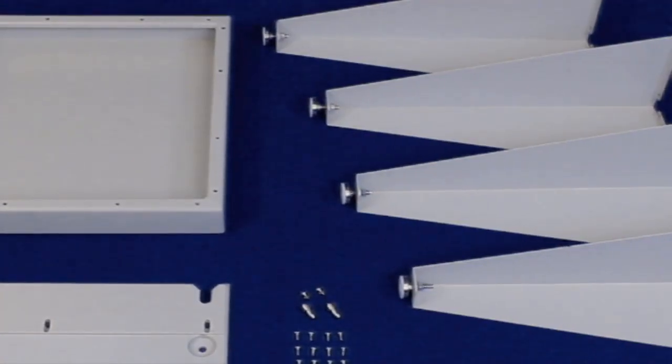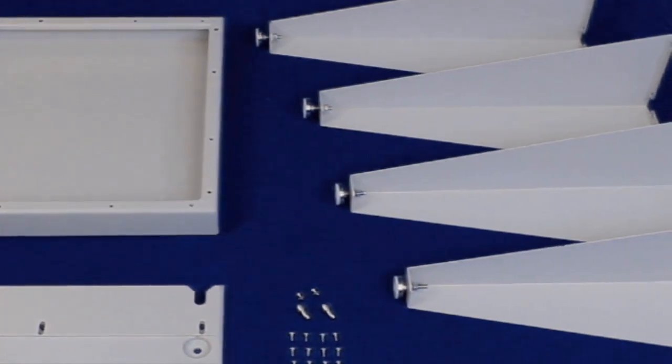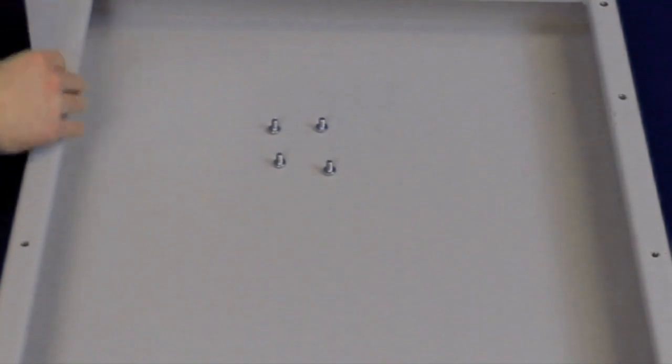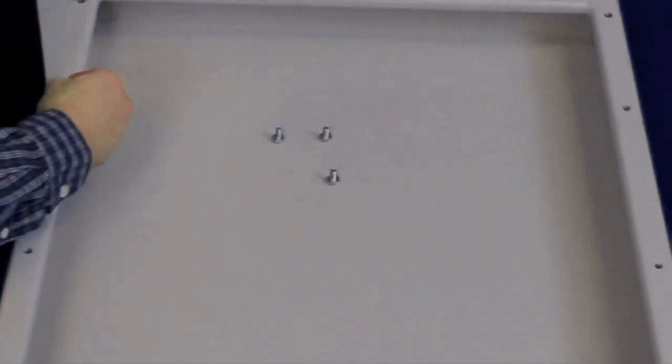Unbox the printer stand and unwrap all parts. Position the base plate face down on the floor and align each leg with the holes in the plate. Hand start each screw but do not tighten.